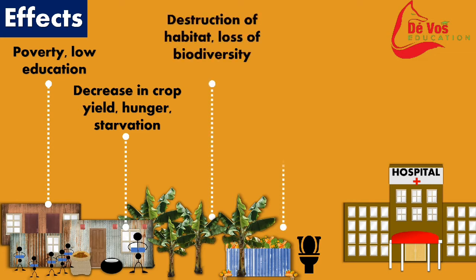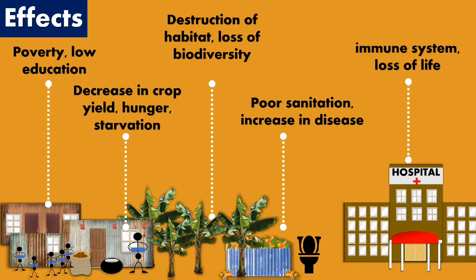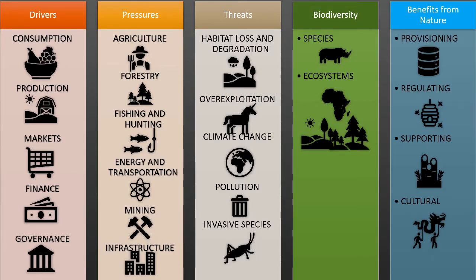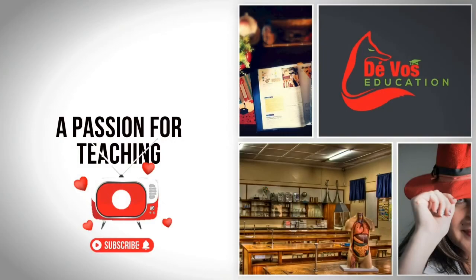This has a severe effect. It leads to poverty and low education. There's also a decrease in crops which yield less and then there's hunger and starvation. Destruction of habitat which leads to loss of biodiversity. There's poor sanitation which leads to an increase in diseases, and a reduced immune system which leads to death.